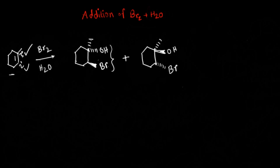Now we have to consider three things when you react an alkene with different molecules, especially in the case of an addition reaction. The first thing we have to consider is the reagents. In this case we're reacting our bromine molecule with the alkene in presence of water, so our reagents are bromine and water.